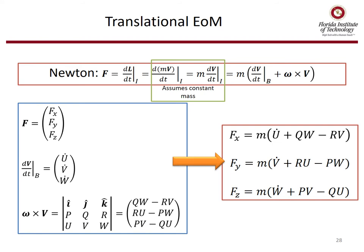For the translational equations of motion, we use F equals ma. We assume constant mass, but we have to take the derivative of the velocity vector and use omega cross the velocity vector. When we do all that, we get three equations — force in the x-direction, force in the y-direction, and force in the z-direction on the left-hand side, with the corresponding airplane response on the right-hand side.